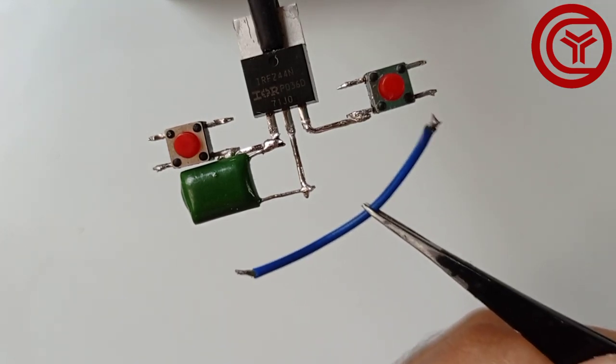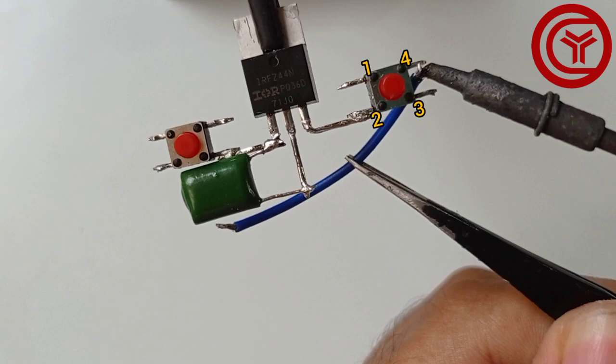Take a jumper wire and solder it from push button to gate pin of MOSFET.